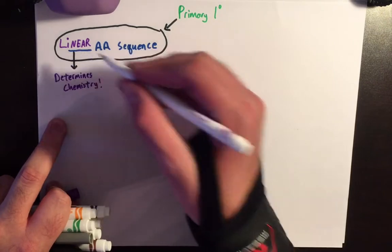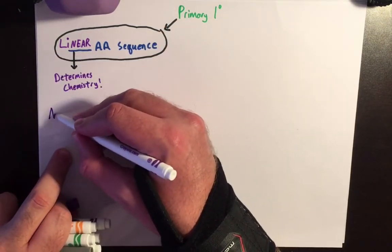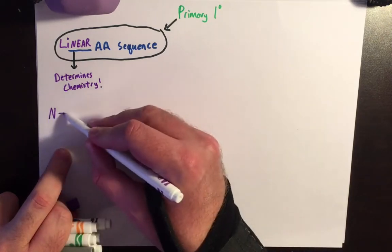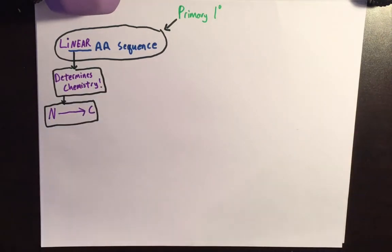And just for giggles, when we say linear, what I usually mean is that we are running in some type of direction from an N-terminus, usually to a C-terminus. So let me just give you an example that kind of illustrates this point home.